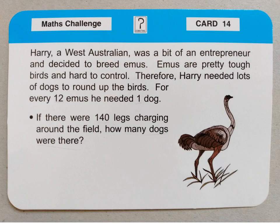Next one. Harry, a West Australian, was a bit of an entrepreneur and decided to breed emus. Emus are pretty tough birds and hard to control, so Harry needed lots of dogs to round up the birds. For every 12 emus, he needed one dog. If there were 140 legs charging around the field, how many dogs were there? Could it be that there were 12 emus and one dog — would that account for all those legs? Or must it be 24 emus and two dogs? 36 emus and three dogs? How many dogs do we need to account for that many legs? Pause and have a go.